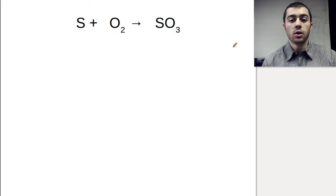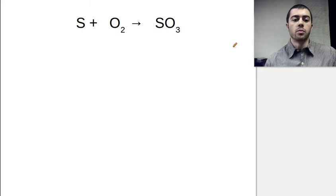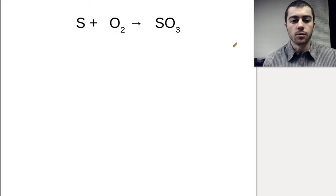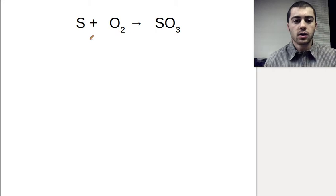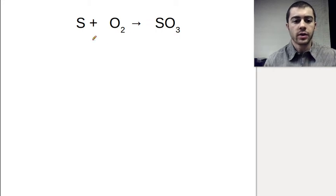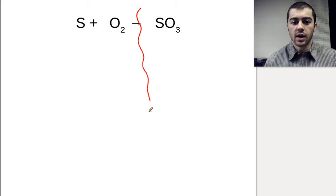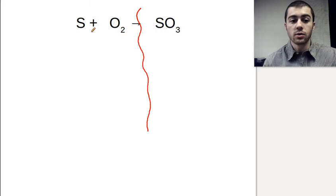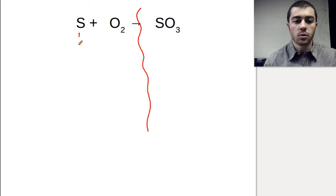Alright, so we're going to do a little more practice with balancing here. So if we start with this first one, we've got sulfur and oxygen making sulfur trioxide. We'll start with just one element at a time, saving the H's and O's for last. We'll start with the sulfur.